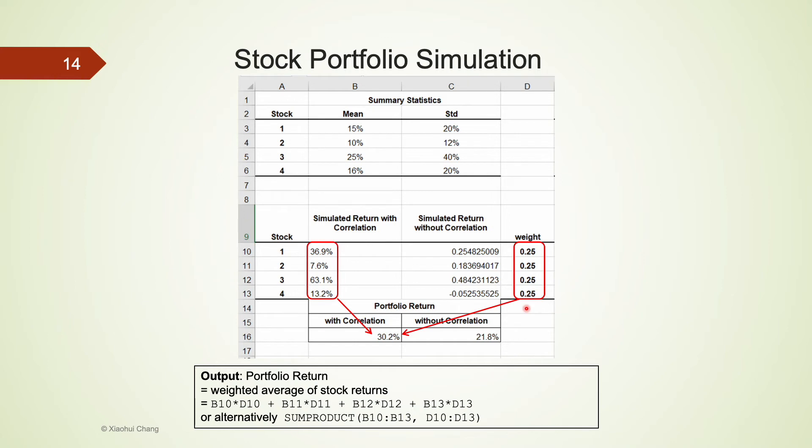Over here, you could use the summation to compute it. Alternatively, you can use sum-product Excel function to calculate it. After the model is set up, we can proceed with the simulation using at-risk.